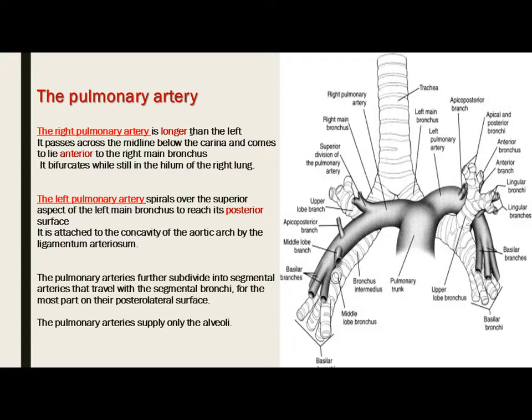The right pulmonary artery passes horizontally from the midline below the carina to reach the right lung. It has a longer course in comparison to the left pulmonary artery and it lies anterior to the right main bronchus. Anterior to the right pulmonary artery lies the superior division of the right superior pulmonary vein, the ascending aorta, and the inferior vena cava.